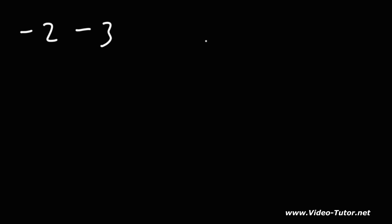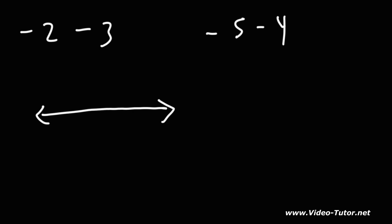Go ahead and try these two examples: what's negative 2 minus 3, and negative 5 minus 4? We can't simplify these like the first two. Starting with negative 2, we want to subtract 3, so we travel three units to the left — negative 3, negative 4, negative 5. So negative 2 minus 3 is negative 5.